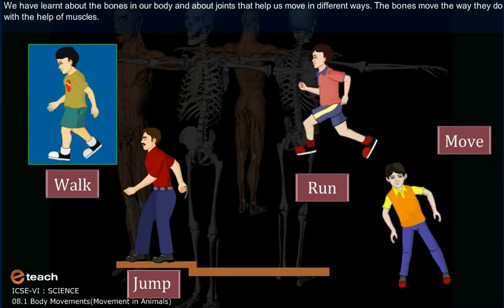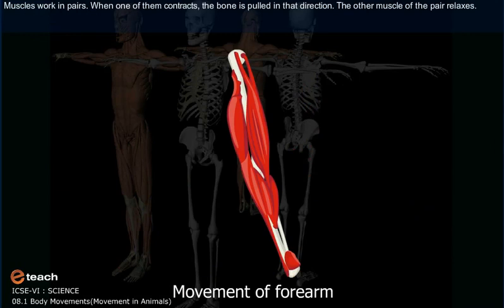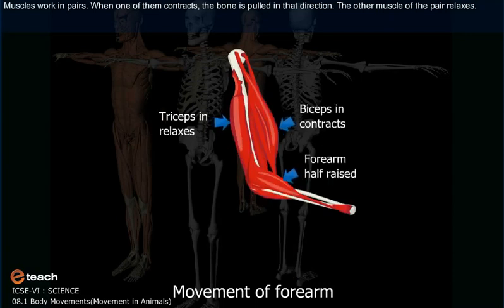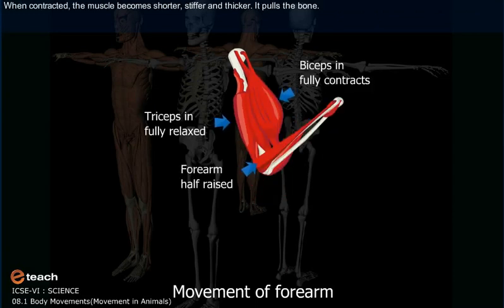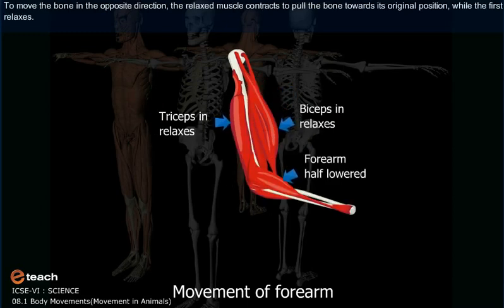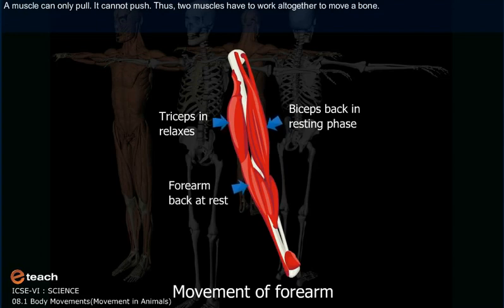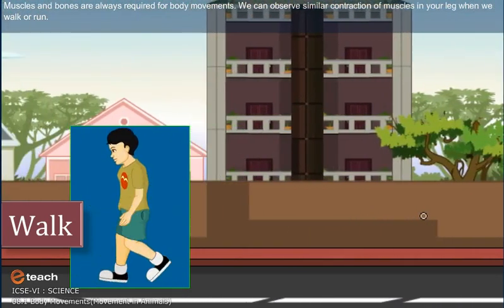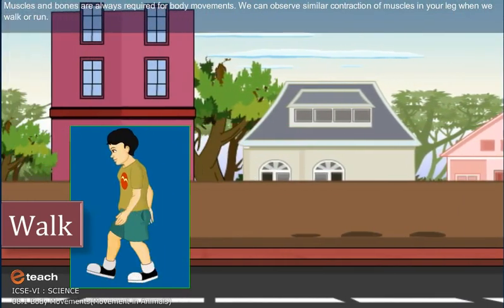The bones move the way they do with the help of muscles. Muscles work in pairs. When one of them contracts, the bone is pulled in that direction, while the other muscle of the pair relaxes. When contracted, the muscle becomes shorter, stiffer, and thicker — it pulls the bone. To move the bone in the opposite direction, the relaxed muscle contracts to pull the bone towards its original position while the first relaxes. A muscle can only pull; it cannot push. Thus, two muscles have to work together to move a bone. Muscles and bones are always required for body movements. We can observe similar contraction of muscles in our legs when we walk or run.